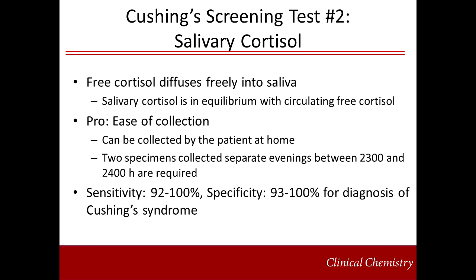Since the diurnal variation of cortisol is often lost in Cushing's patients, measuring cortisol in the late evening when it should be lowest will readily demonstrate a loss of the cortisol nadir. Because unbound cortisol freely diffuses into saliva, salivary cortisol reflects the amount of free cortisol in circulation. Additionally, salivary cortisol is easily collected and can be done by the patient at home, making late evening collection convenient and feasible. Studies have demonstrated that elevated salivary cortisol is highly sensitive and specific for Cushing's syndrome.